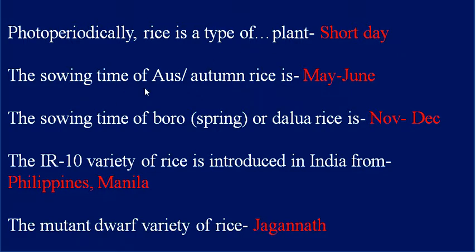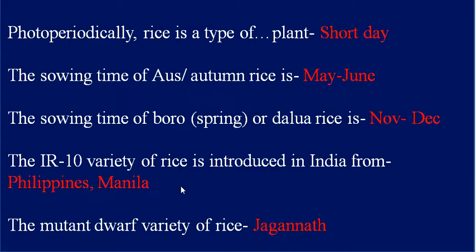The sowing time of autumn rice is May to June. The sowing time of spring rice is November to December.